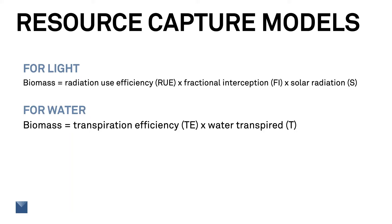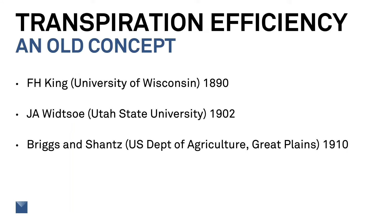We could use the non-limiting value of TE or of RUE to do the calculation, and then pick the smallest as the actual biomass produced for that time increment in our model. The idea of using transpiration efficiency isn't new — the model we just derived was being used to good effect more than a century and a quarter ago.